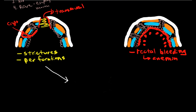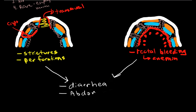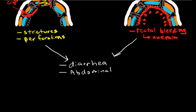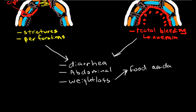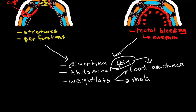Now let's talk about symptoms they have in common. Both commonly present with diarrhea and abdominal pain, which are direct results of inflammation. Weight loss is also common — in part due to food avoidance because of the pain, and also due to malabsorption because inflammation of the gastric mucosa interferes with absorption. And because of the inflammation, it frequently causes fevers.